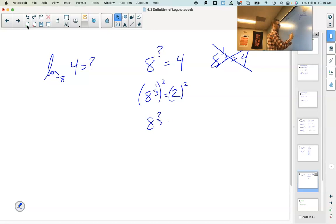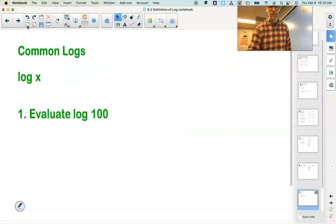But here's what I notice. I want 4, and 8 to the 1 third is 2. Well, isn't 2 squared 4? So can't I square this? So that gives me 8 to the 2 thirds equals 4. So this would be 2 thirds.